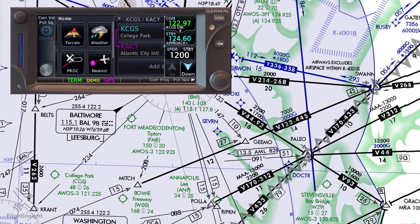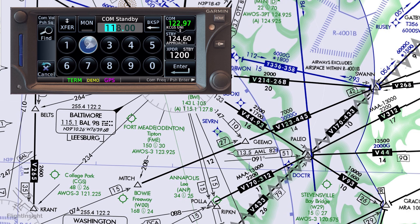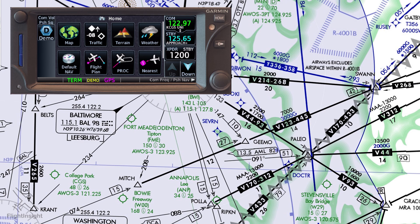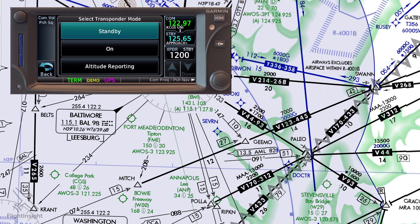Now after we've filed we'll call for our clearance. ATC will give us a departure frequency of, let's say, 125.65, which we can set by tapping the standby frequency in the upper right and entering 12565 and enter. They'll also give us a squawk code 5317, which we'll enter by tapping the transponder code, entering our assigned code, and then we can tap the mode to set altitude reporting or mode C. Here at non-towered College Park we'll activate the mode C from the ground.